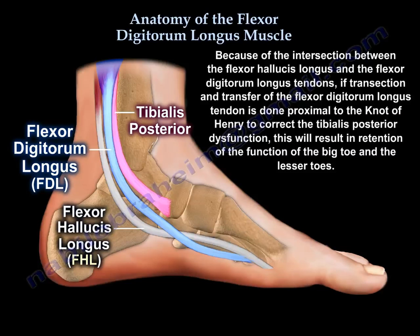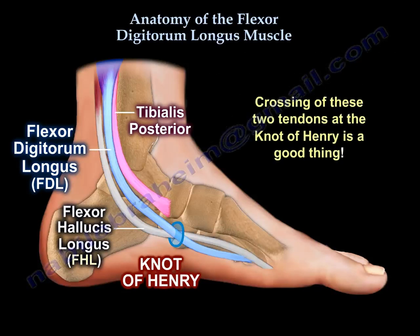Because of that intersection between the flexor hallucis longus and the flexor digitorum longus tendons, if we transect the digitorum proximal to the knot of Henry to correct the tibialis posterior dysfunction, that will result in retention of the function of the big toe and the lesser toes. So the crossing of the two tendons at the knot of Henry, and having a connection between them, is a good thing.